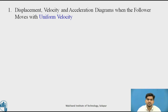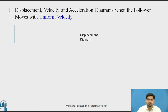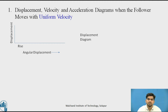First, we will see how to draw the displacement, velocity, and acceleration diagram when the follower moves with uniform velocity. We will draw the displacement diagram. This vertical line indicates the motion of the follower — the displacement of the follower — also called the stroke length or lift of the follower. This gives you the y-axis. The x-axis indicates the angular displacement of the cam. When we rotate the cam, the follower will rise for a certain angular rotation of the cam.